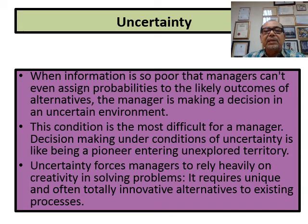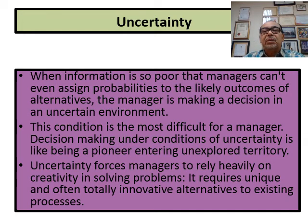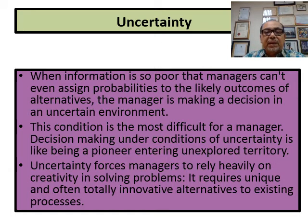Uncertainty is when information is so poor that managers can't even assign probabilities to likely outcomes of alternatives — the manager is making decisions in an uncertain environment. Certain things are very uncertain and nobody knows. The manager still has to make a decision, right or wrong — they only know at the end of the day. You cannot say 'I'll wait because I'm not certain' because then you won't complete the job. This condition is the most difficult for a manager.